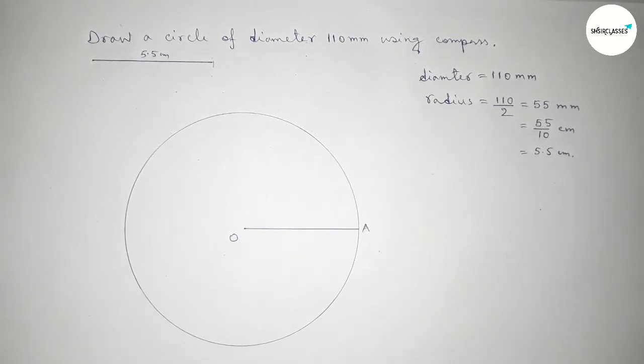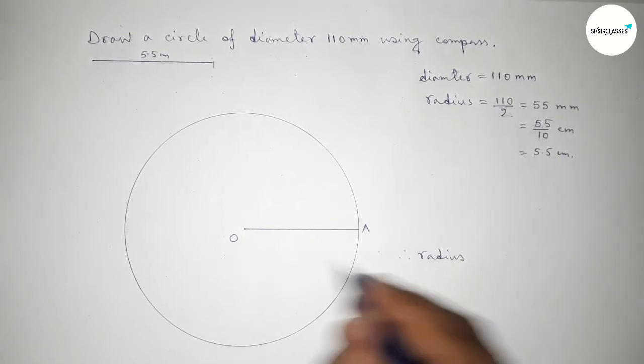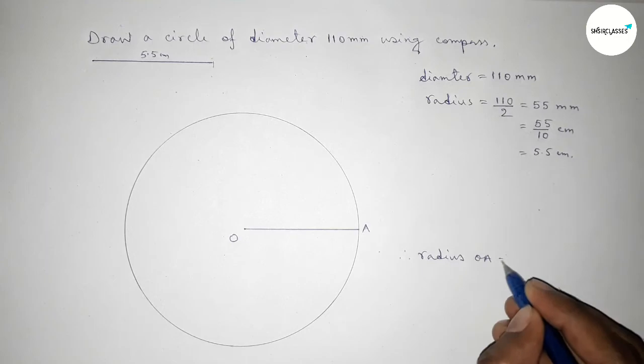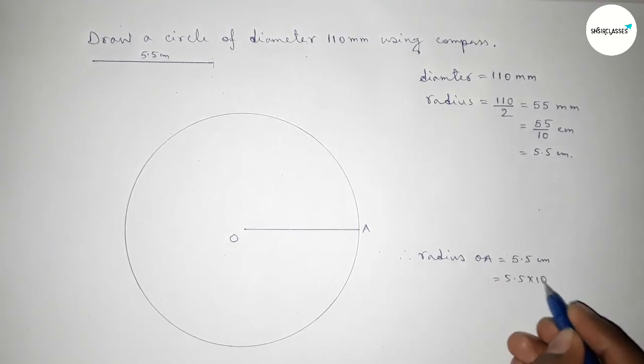Taking here point A, so therefore radius OA equals 5.5 centimeter. Now converting into millimeter by multiplying by 10, so this is 55 millimeter.